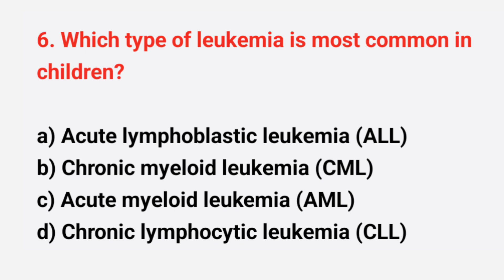Question number 6: which type of leukemia is most common in children? The right answer is option A, acute lymphoblastic leukemia.